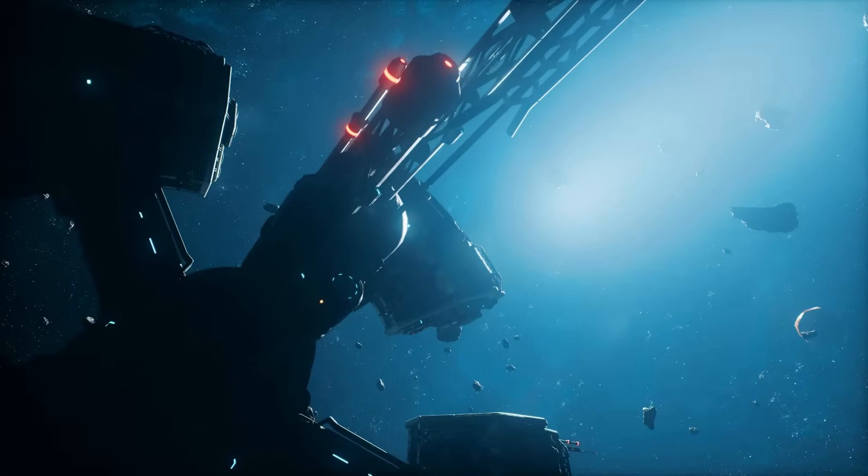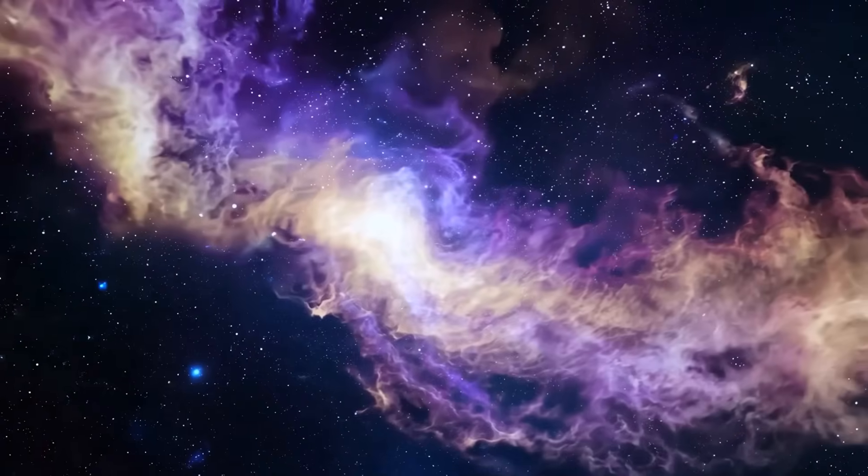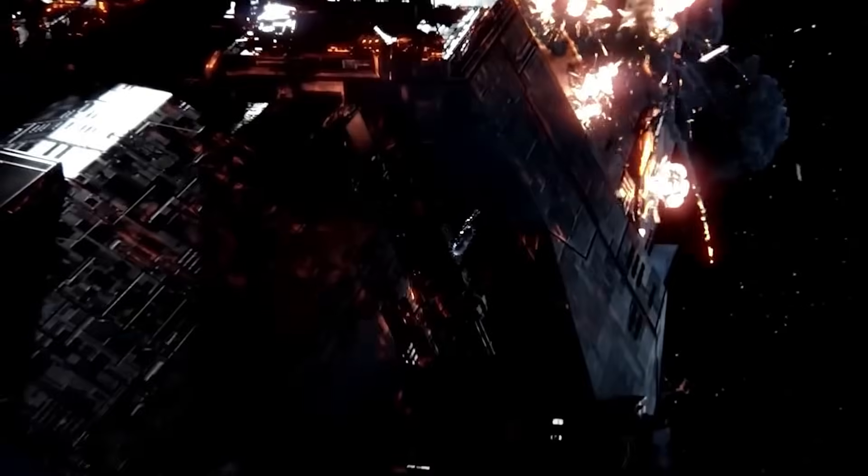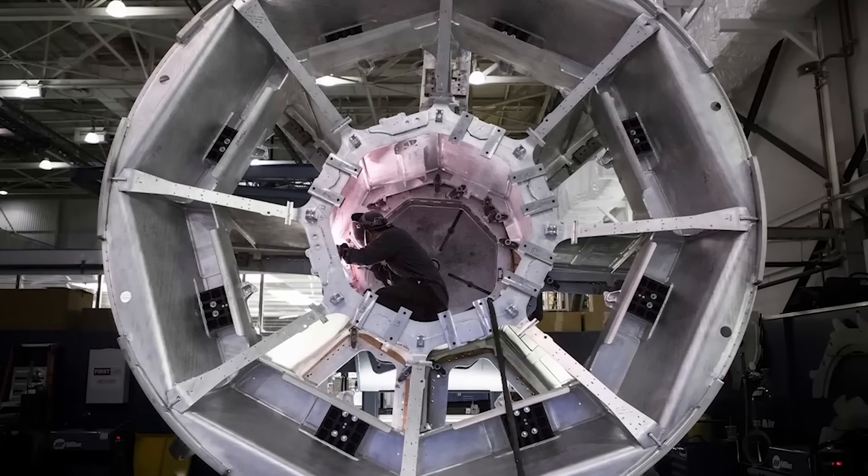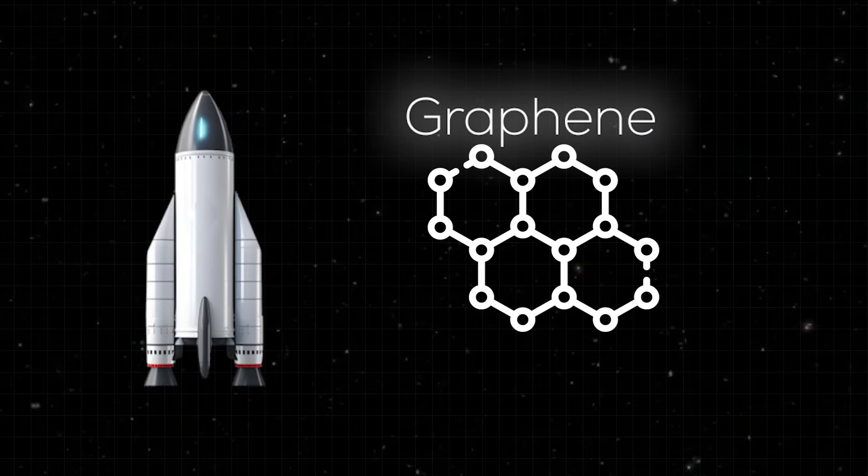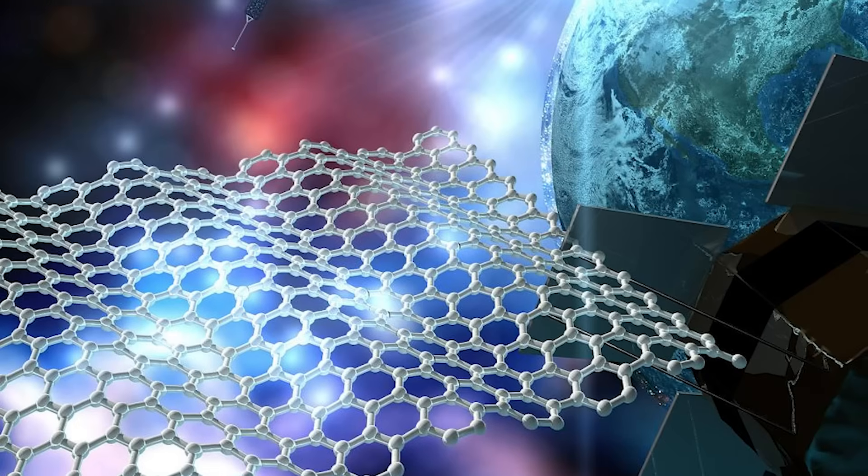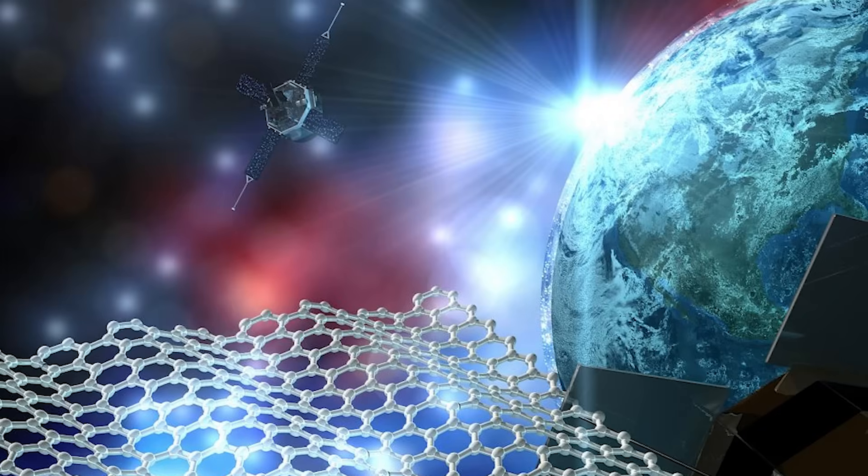Then there is the problem of materials. At 10% or 20% of the speed of light, individual atoms of interstellar gas and tiny dust grains become dangerous projectiles. A single grain of sand hitting the spacecraft could release energy comparable to a small explosive. The hull, the shielding, and the sail, if we use one, must be made of materials that are incredibly strong, heat resistant, and lightweight. We are already experimenting with graphene, metamaterials, and advanced ceramics. But nothing we have today has been proven to survive decades at relativistic speeds in the real interstellar medium.